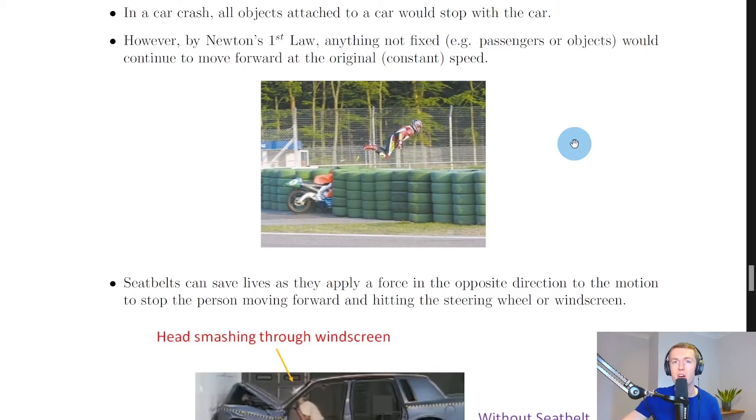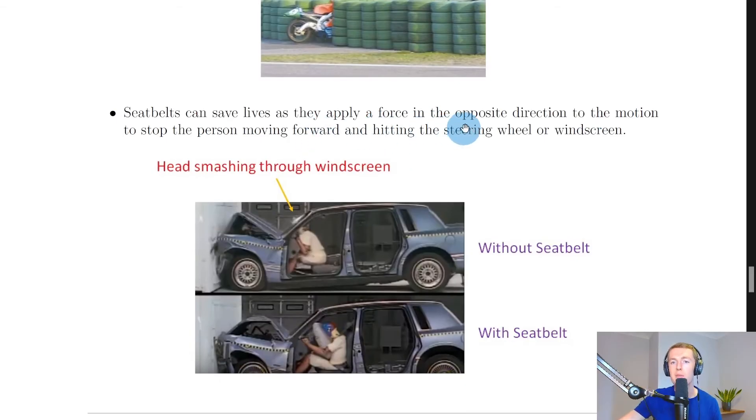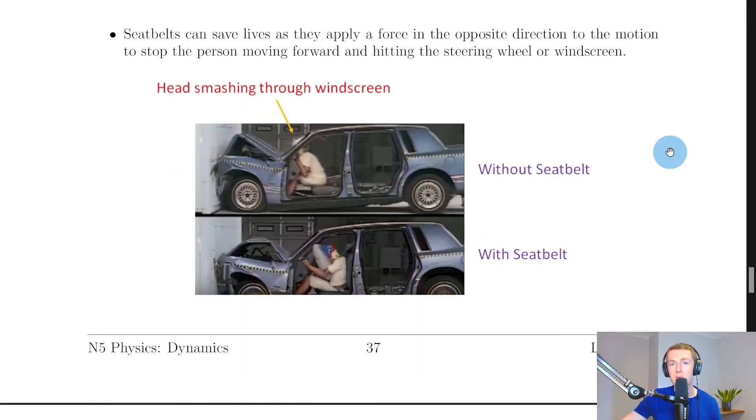But this isn't the case in a car where you have seatbelts. Seatbelts can save lives as they apply a force in the opposite direction to the motion to stop the person moving forward and hitting the steering wheel or windscreen. So in the event of a crash, seatbelts provide that balanced force to keep you within the car and to stop you moving forward at the original speed that the car was doing. And in this picture you can see that without a seatbelt, your head could go through the windscreen, for example. But with a seatbelt and an airbag in this case, you're going to remain inside the car, which is much safer.